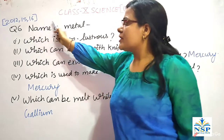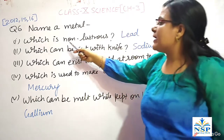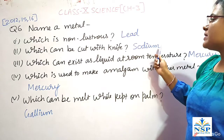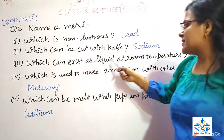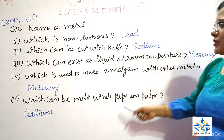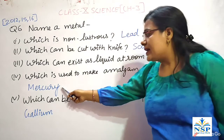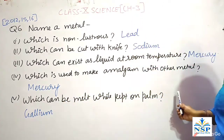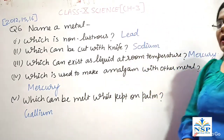Question number 6: name a metal which is non-lustrous — lead is a metal which is non-lustrous. Which metal can be cut with a knife? Sodium is a very soft metal which can be cut with a knife. Which metal exists as liquid at room temperature? Mercury is a metal which exists as liquid at room temperature. Which metal is used to make amalgam with other metals? Mercury is used to make amalgam. Which metal can melt while kept on the palm? Gallium is a metal which can melt while kept on our palm.